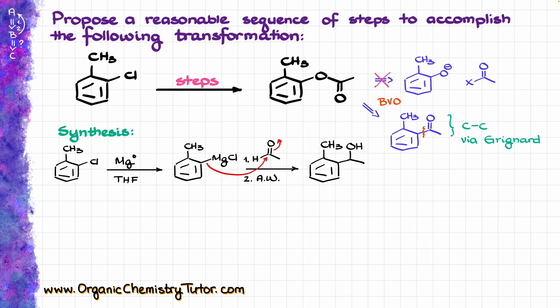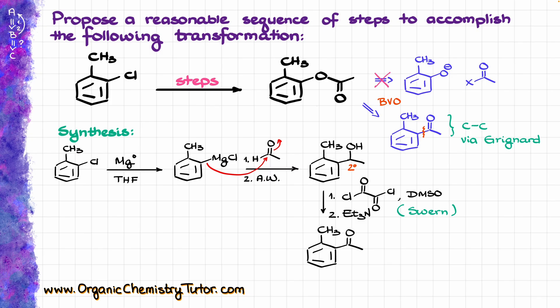Now we need to oxidize our alcohol into the ketone, and since this is already a secondary alcohol, the oxidation method is not really going to matter much here, so we can use almost anything that we like. I'm going to go with Swern oxidation to make sure that I don't over-oxidize my molecule, and don't accidentally convert everything into carboxylic acids by using Jones oxidation. Because with Jones oxidation, using chromium oxide and sulfuric acid, chromic acid, or potassium bichromate, those can actually oxidize benzylic positions as long as they have a hydrogen — so Jones oxidation would oxidize this methyl group into the carboxylic acid, and this group as well, chopping off the carbon and oxidizing it to the carboxylic acid. We definitely don't want to see that.